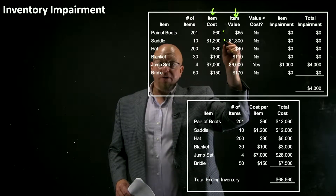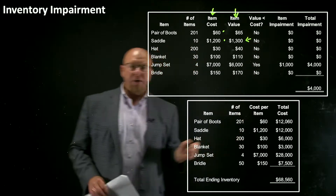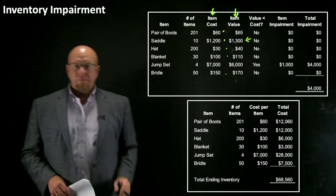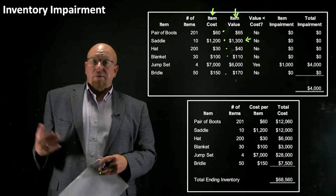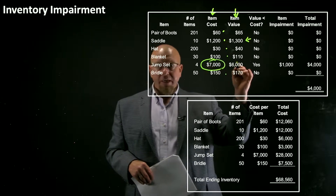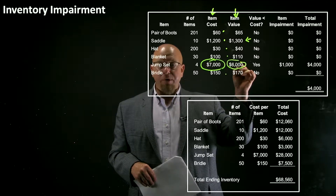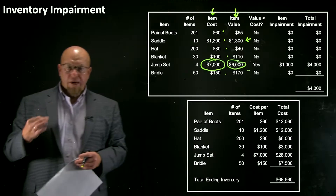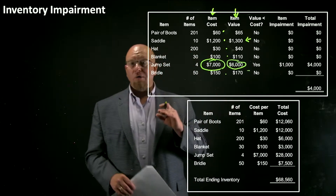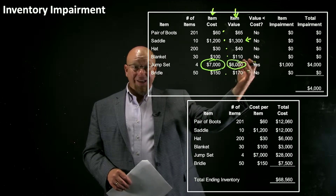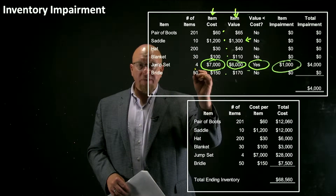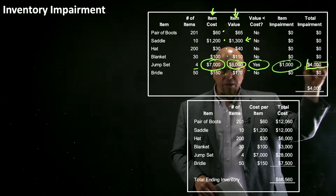For the saddle, our cost is $1,200 and the market or net realizable value is $1,300 — cost is still lower. The same is true for the hats, blankets, and bridles. But let's say demand for jump sets has decreased. Even though we paid $7,000 each to purchase these four jump sets, right now the value per jump set is $6,000. There's an impairment indicated because the lower of cost or value is the value. The impairment is $1,000 per item; with four in inventory, that's a $4,000 adjustment.